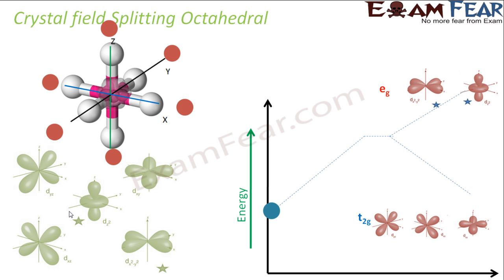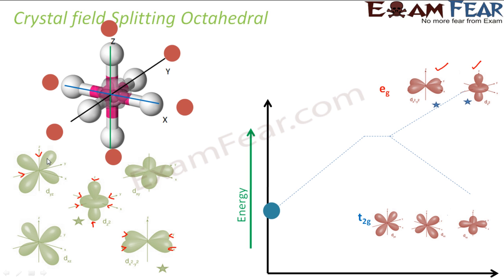When ligands approach from the xyz directions, these orbitals are impacted the most. The moment a ligand touches here, the orbital is impacted. Coming from the x direction — impacted; y direction — impacted; z — not much. But x and y impact these two orbitals a lot, and their energy goes higher. Once they split, the other three orbitals coming from different directions are not impacted as much.